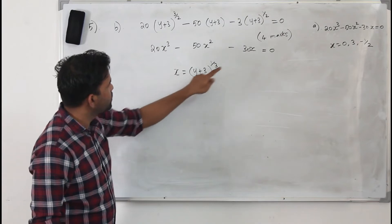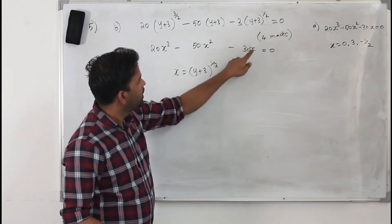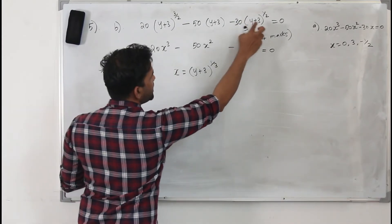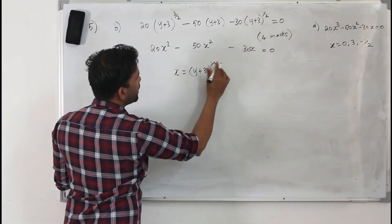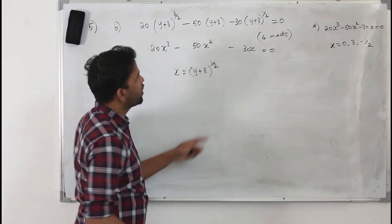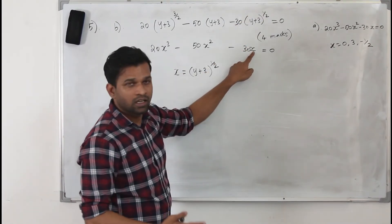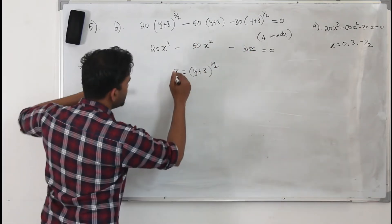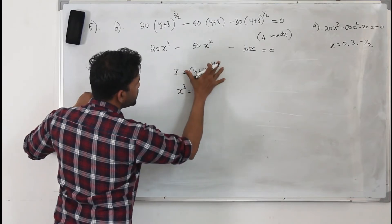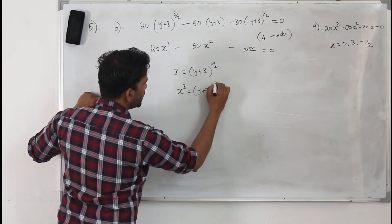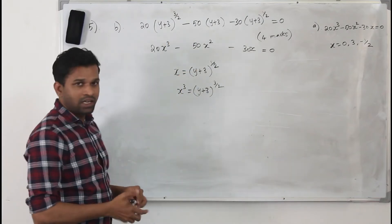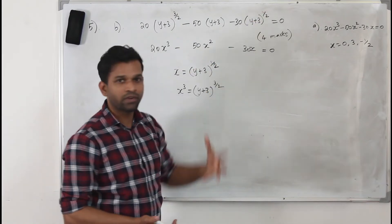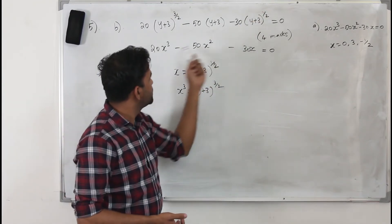So when you substitute x equals (y plus 3) to the power of one half, and you square it, x squared becomes y plus 3. When you raise to the power 3, x cubed becomes (y plus 3) to the power 3 over 2. So basically these two equations are the same — only you have (y plus 3) to the power of one half in place of x. You replace that by x and you get the part A equation.